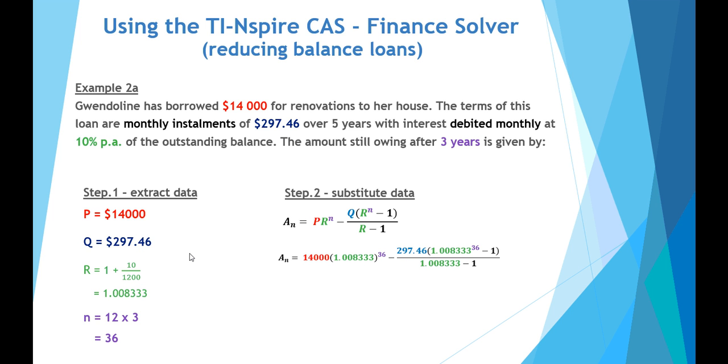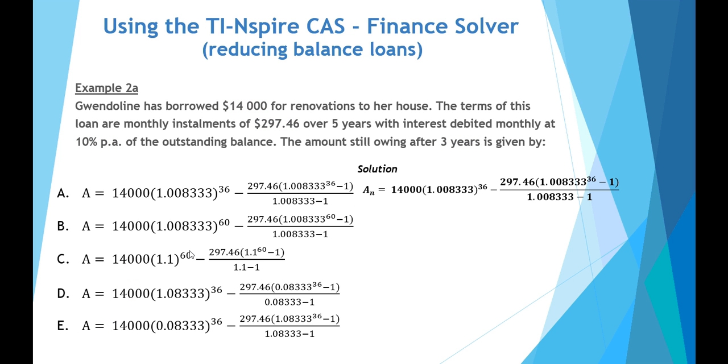Again, we substitute our values in, and from there we can calculate the correct formula. And we can see that option A fits this perfectly. Option B, as can be clearly seen, has the wrong number of payments. Option C has the wrong growth rate. Option D has an incorrect growth rate written on the fraction, the right-hand side of the annuities formula. And option E also has an incorrect growth rate written on the left-hand side of the annuities formula.